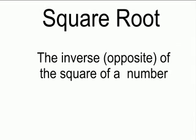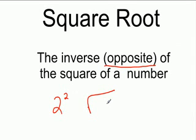This video is going to be over square roots. A square root is the opposite of the square of a number. So for instance, if you had 2 squared, the opposite of 2 squared would be the square root of 2. We're going to be talking about how to find the square root of a number.